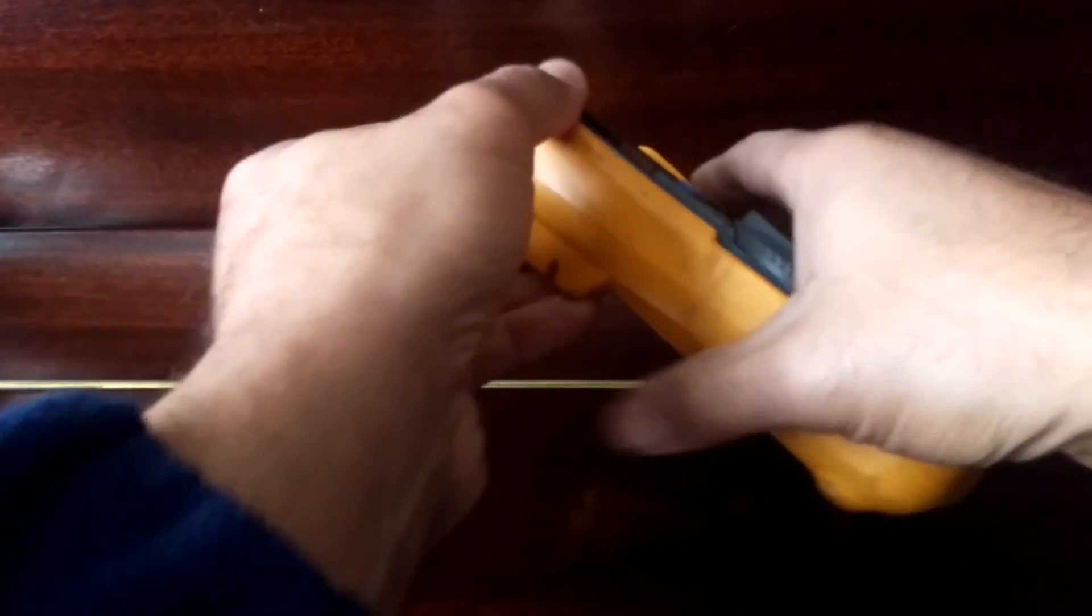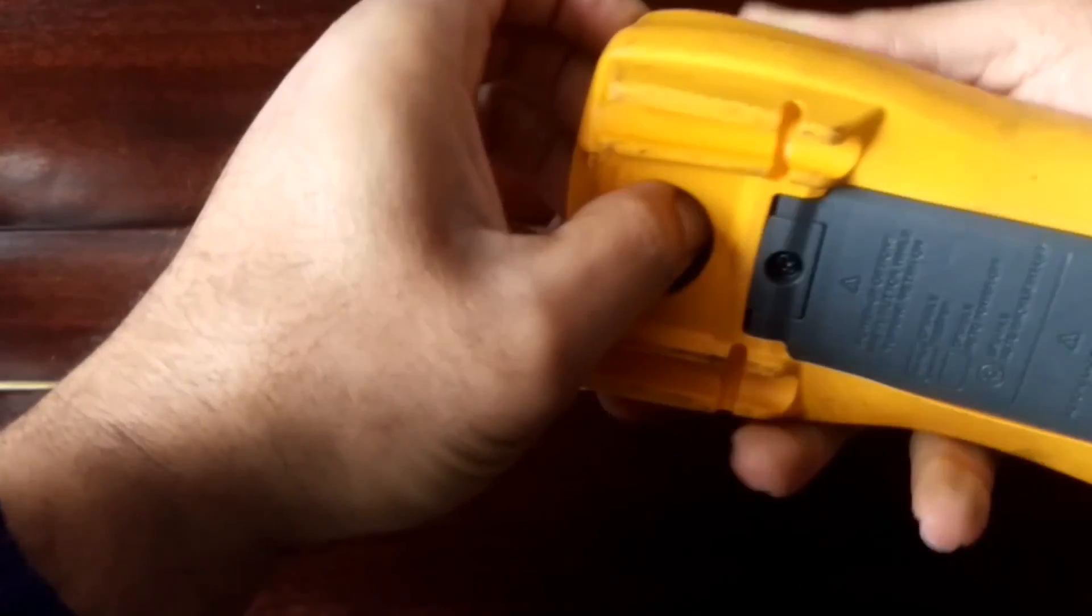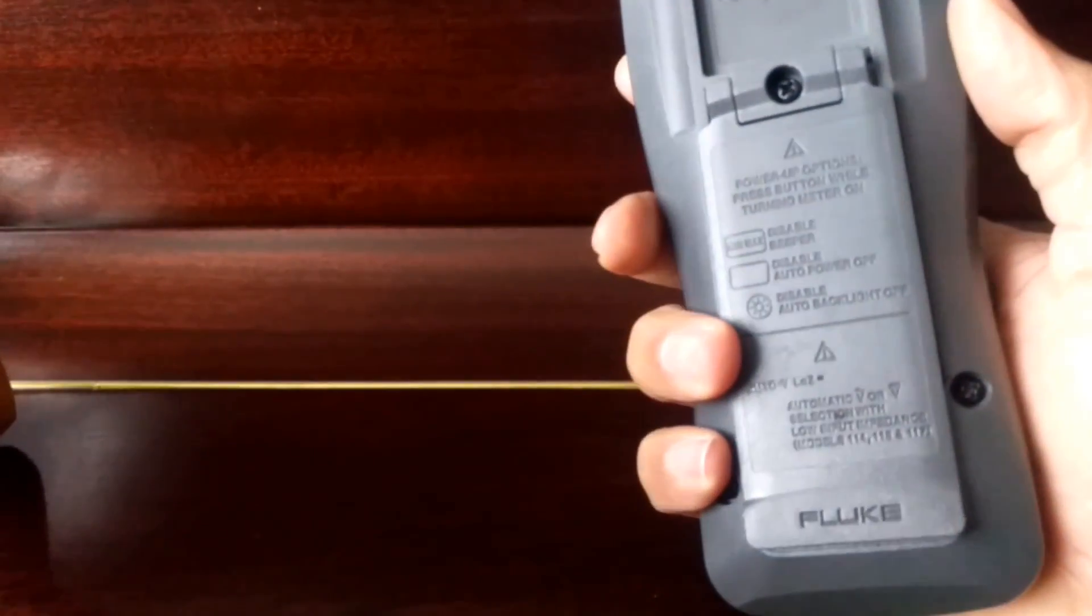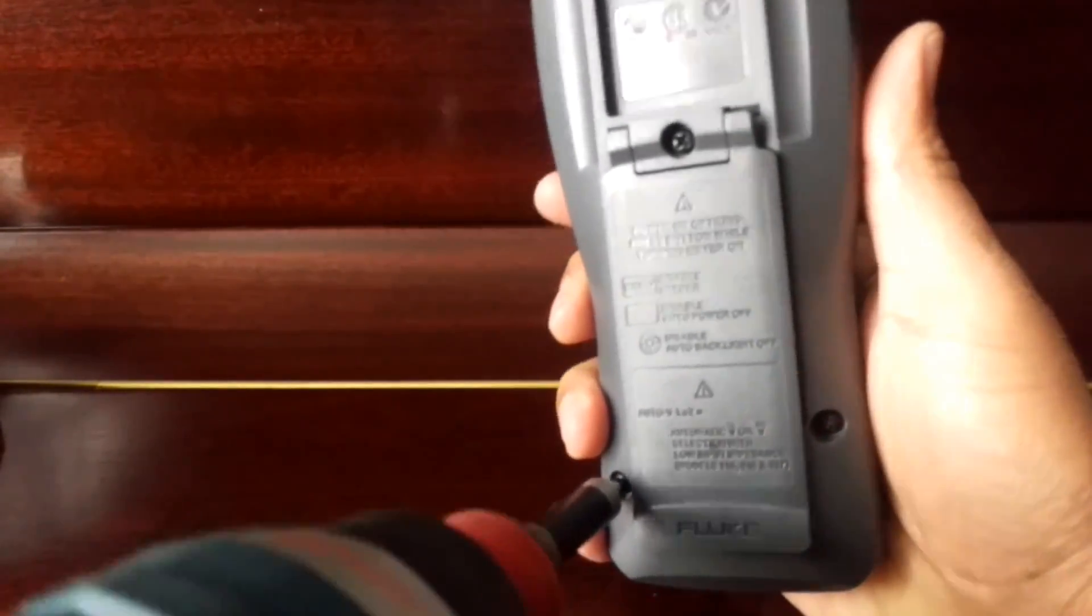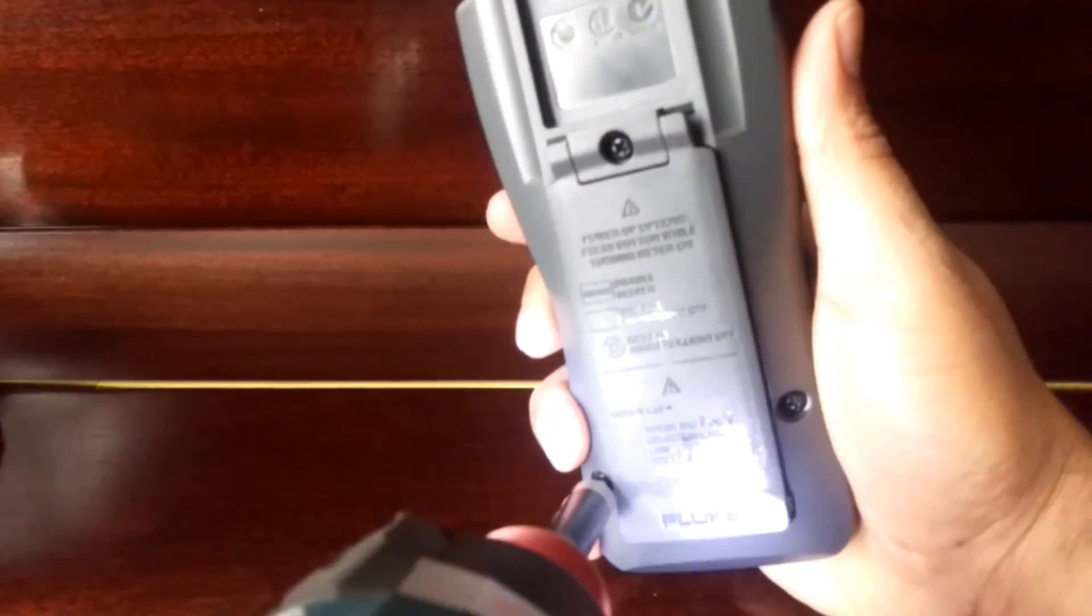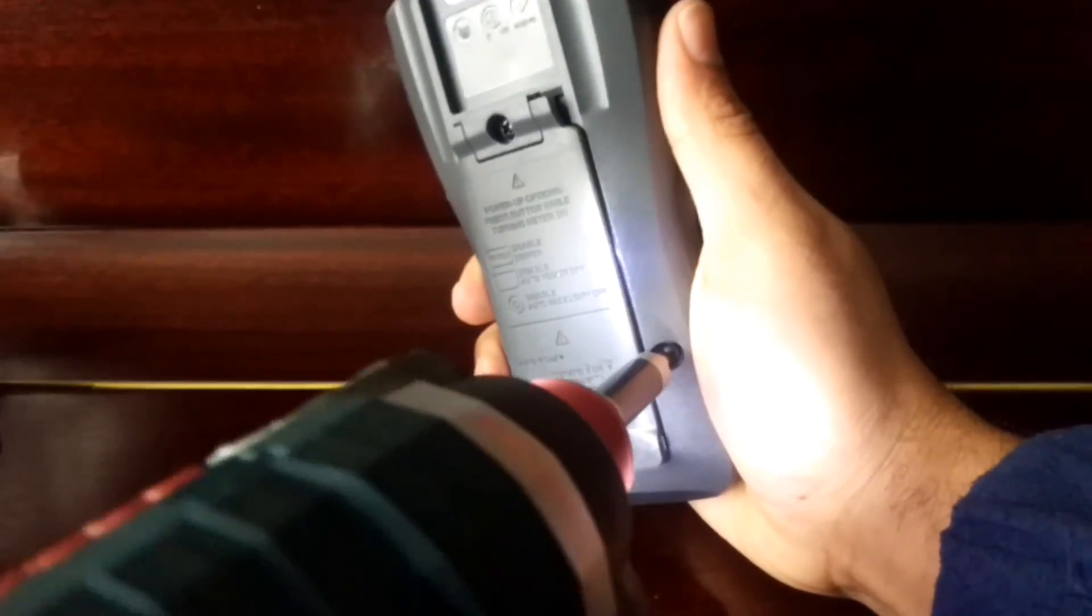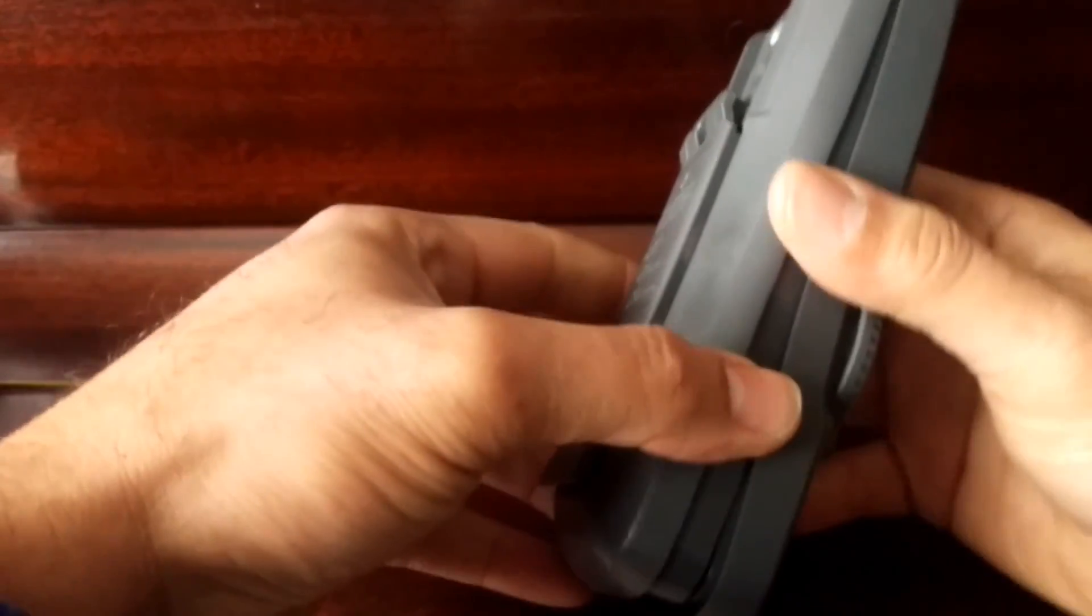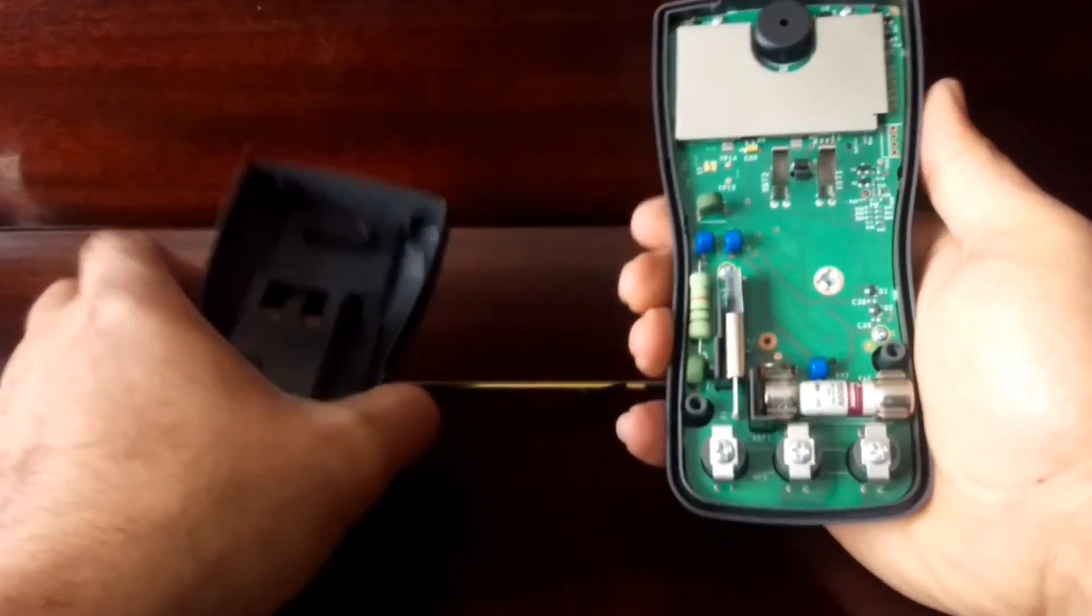So it's time to take the Fluke apart. And if any of you thought Flukes were yellow, they're not. They're actually grey. It's just a yellow cover on them. So I'm just going to pop it open. A couple of screws on the back. Don't need to take off the battery screw at the top. So it's just these two screws here. Nice and quick. And then we'll just prise it open and see what's waiting for us inside.